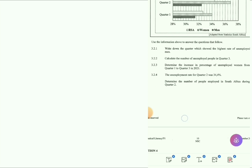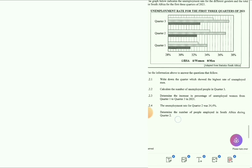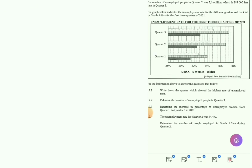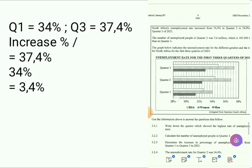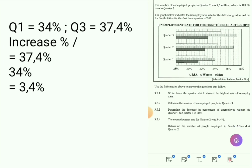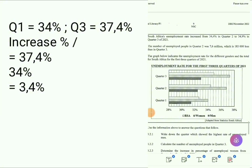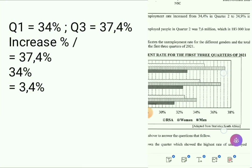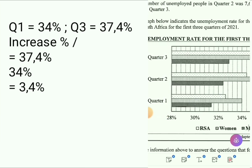Question 3.2.3: Determine the increase in the percentage of unemployed women from Quarter 1 to Quarter 3. The increase is 37.4% minus 34% which equals 3.4%. You just have to look at the table — Quarter 3 for women is 37.4% and Quarter 1 is 34%. Some of you will get this wrong if you don't read the table properly.